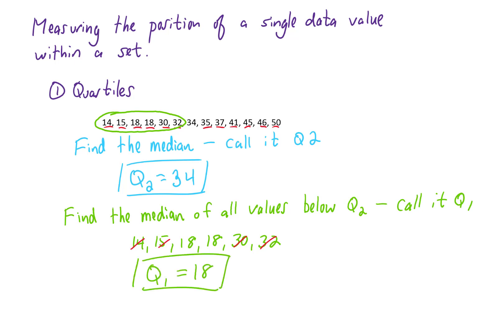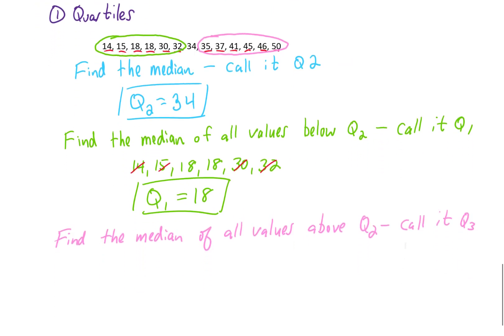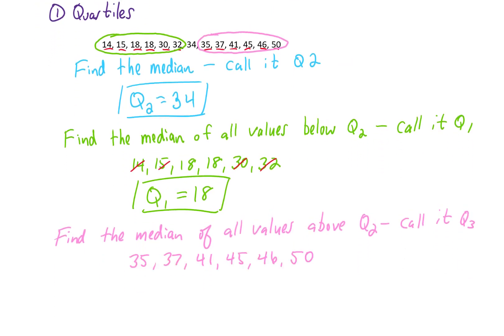Next, we find the median of all data values above Q2. There are all the values above Q2, and we're going to find the median. We found two middle values here, so we average those two — add them together and divide by 2. That gives us 43, which we call the third quartile, or Q3.